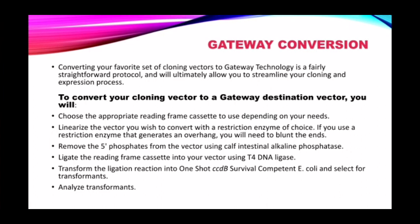Gateway vector conversion allows you to convert your favorite cloning vectors to gateway technology. It is a fairly straightforward protocol that will ultimately allow you to streamline your cloning and expression process. To convert a cloning vector to a gateway destination vector: choose the appropriate reading frame cassette, linearize the vector with a restriction enzyme of choice, blend the ends if an overhang is generated, remove the 5' phosphates using intestinal alkaline phosphatase, ligate the reading frame cassette into your vector using T4 DNA ligase, transform the ligation reaction into One Shot ccdB Survival competent E. coli, select for transformants, and analyze the transformants.